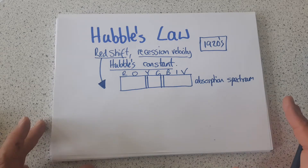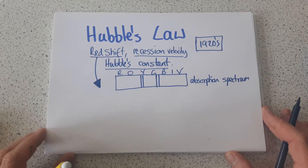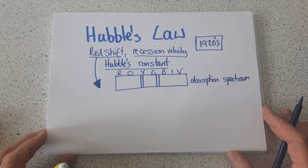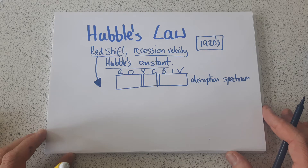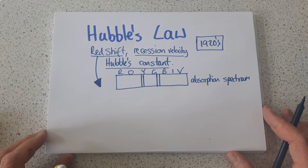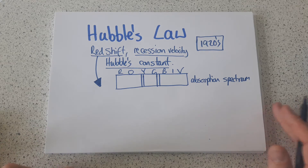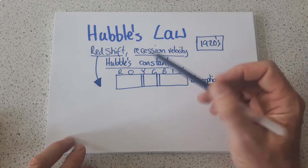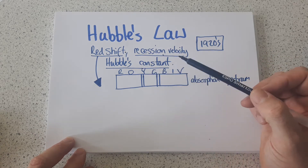Hubble's law is one of the fundamental laws which underpin the relationship between the movement of all objects in the universe, and it was certainly the key idea which led to the construction of what's now known as the Big Bang Theory. So with Hubble's law, we're going to look at redshift, recession velocity, and Hubble's constant.